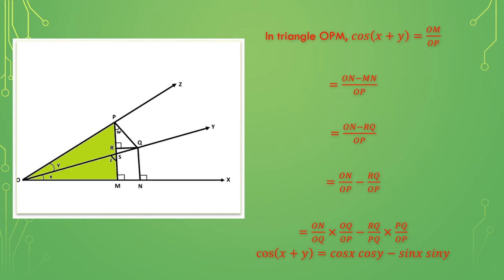In the first part, multiply and divide by OQ. In the second part, multiply and divide by PQ. We can see that OM by OQ is nothing but cos x. In the same manner, OQ by OP means cos y, minus RQ by PQ.